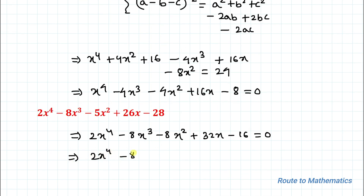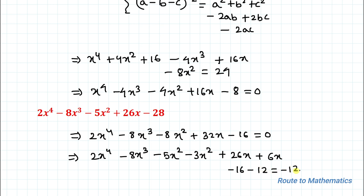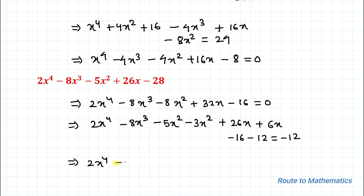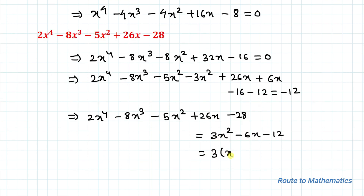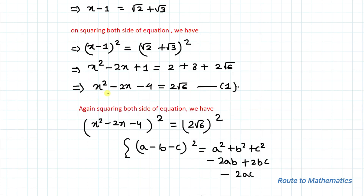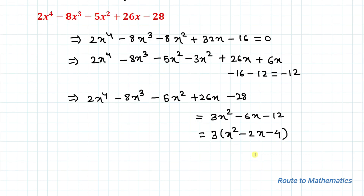Now we rearrange: 2x⁴ minus 8x³ can keep minus 8x² split as minus 5x² minus 3x², and 32x split as 26x plus 6x, and minus 16 written as minus 28 plus 12. This gives us 2x⁴ minus 8x³ minus 5x² plus 26x minus 28 equals 3x² minus 6x minus 12, which equals 3(x² minus 2x minus 4). From Equation 1, x² minus 2x minus 4 equals 2 root 6, so substituting gives 3 times 2 root 6.